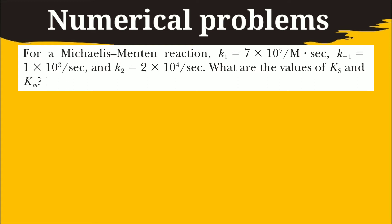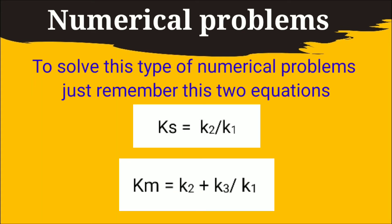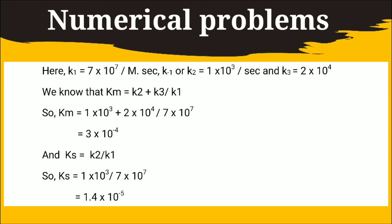Here the values of K1, K2 and K3 are known. You have to calculate the value of Km and Ks. Here Ks is the dissociation constant of the first step in this enzymatic reaction. If you can remember these two equations you can able to solve this type of problems.